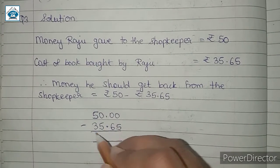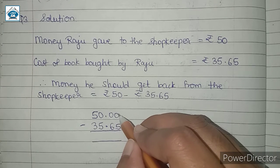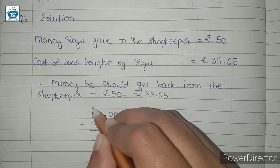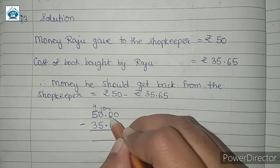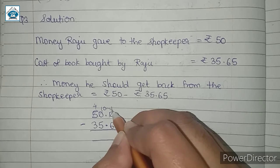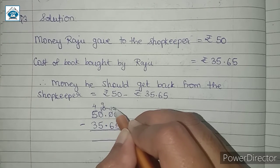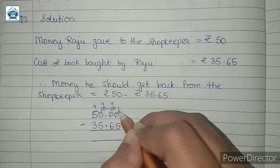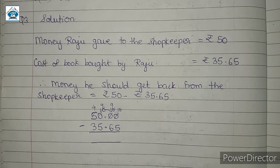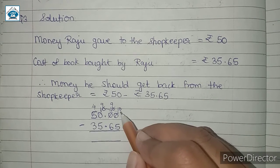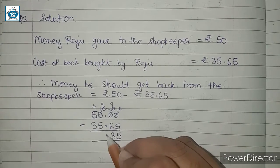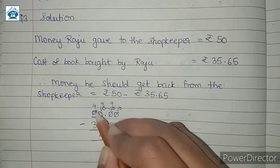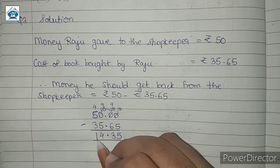Since we have 0 over here, we will carry. We have all zeros, so first this will become 4 and this will become 10. We are carrying 1 to this 0, so this will be 10 and this becomes 9. Again carrying 1, this becomes 9 and this becomes 10. So we have 10 minus 5, which gives 5. Then 9 minus 6 is 3. Point as it is. 9 minus 5 is 4. And 4 minus 3 is 1.